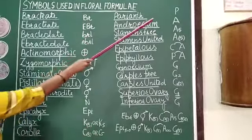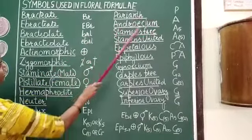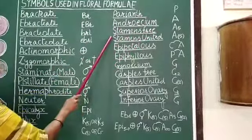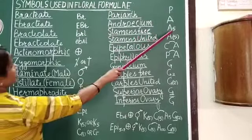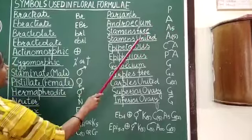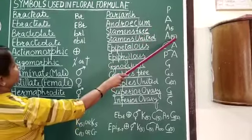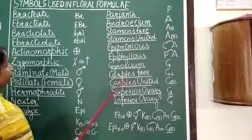Perianth is represented by capital P, Androecium by capital A. If the stamens are free, they are written as subscript below A. If they are united, the number is enclosed within brackets.